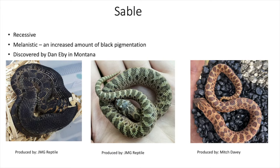First let's talk about what the sable morph is. The sable is a recessive gene and it's a melanistic gene, meaning increased amount of black pigmentation, so it's usually a darker snake. It was originally discovered by Dan Eby in Montana. As you can see, there's a lot of variation in terms of sable — you have the traditional very dark sables on the left, a green sable in the middle, and a reddish sable on the right. Combining yellows, greens, and reds does influence the look of a sable.